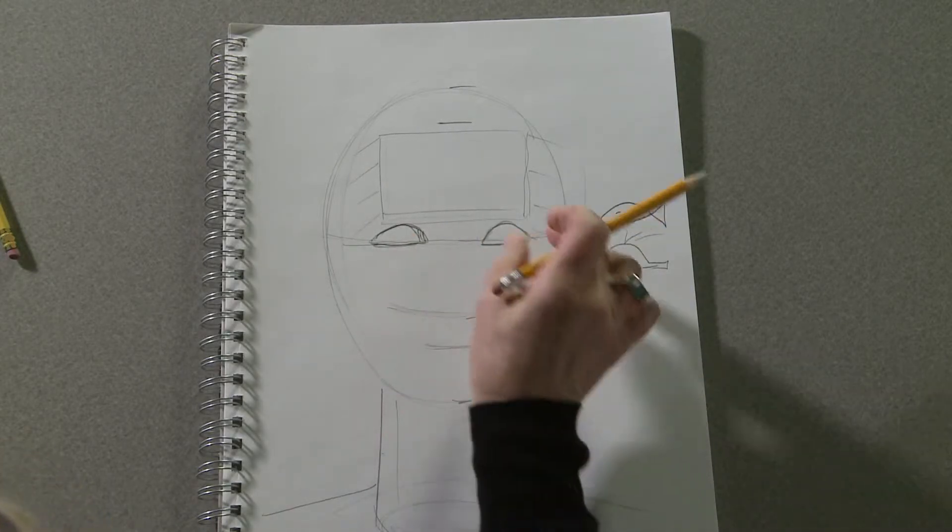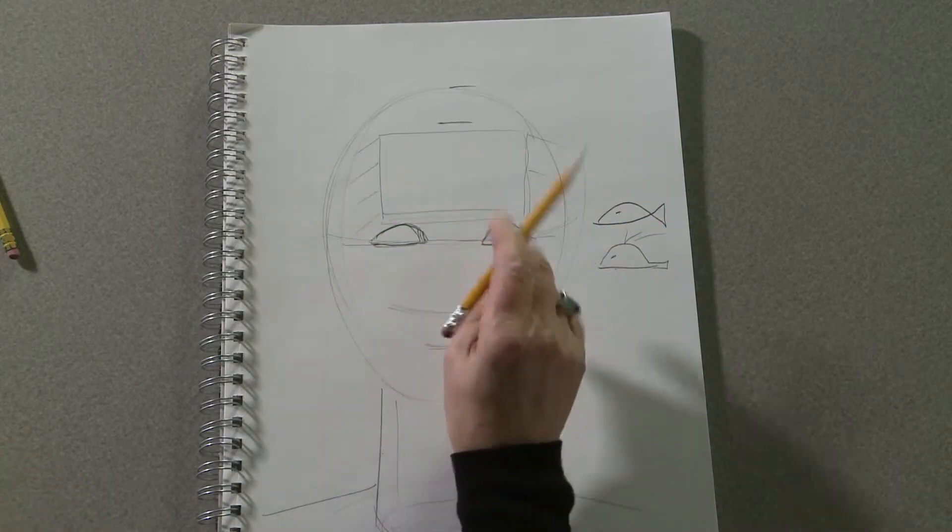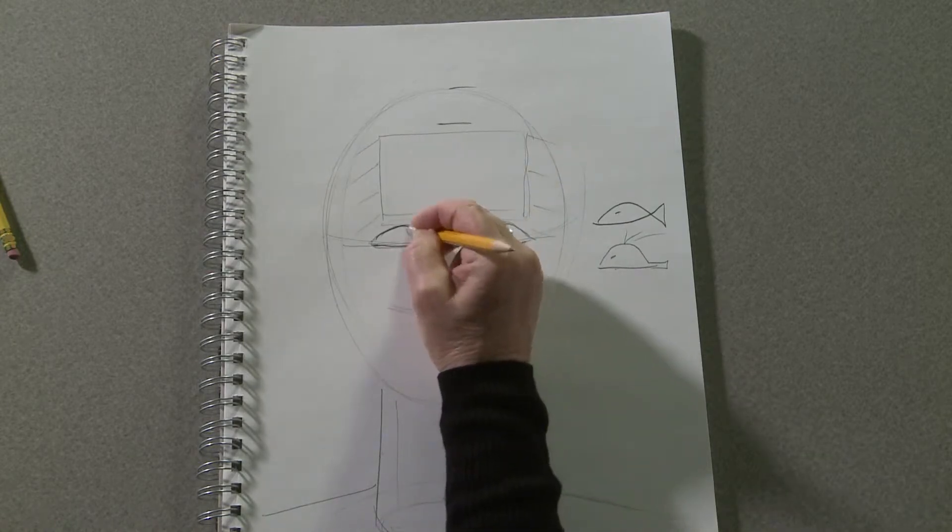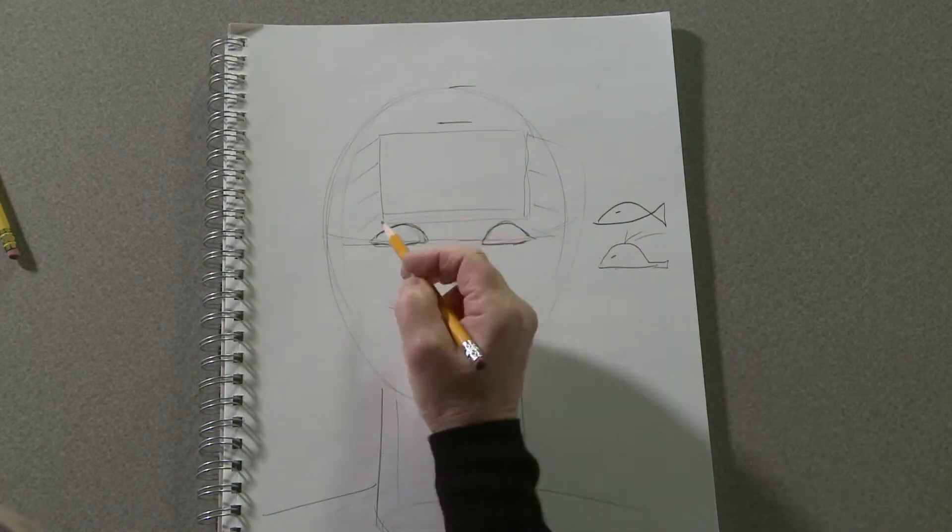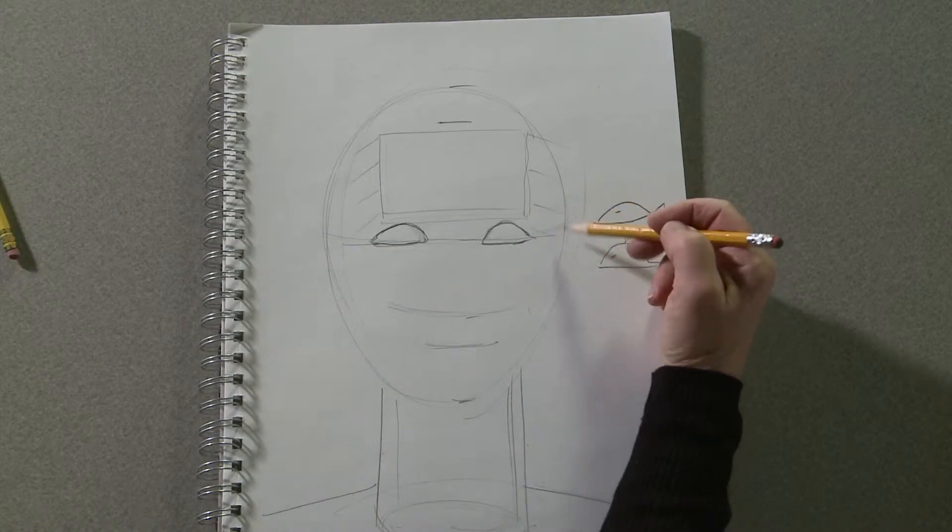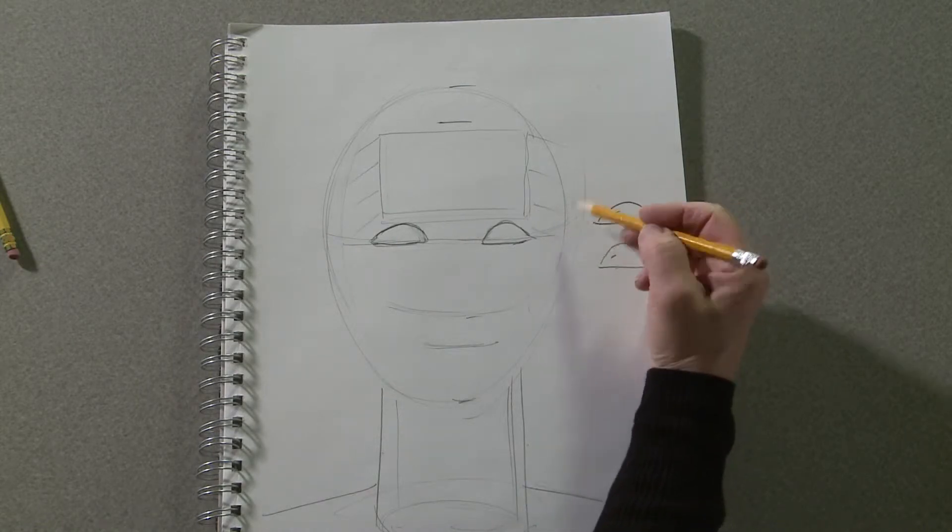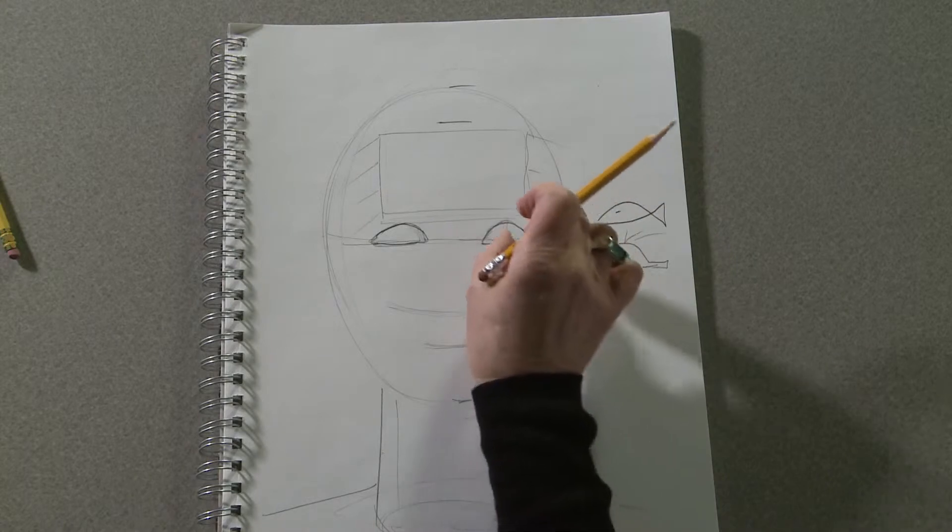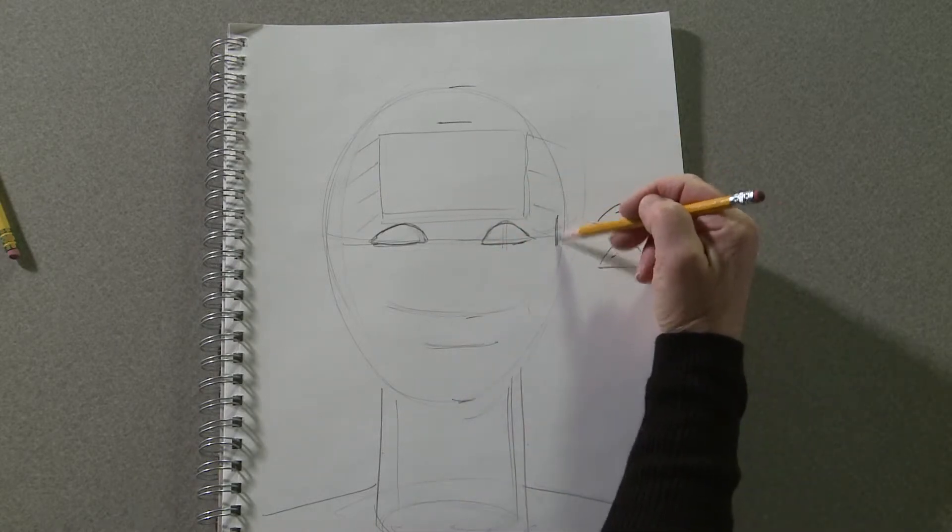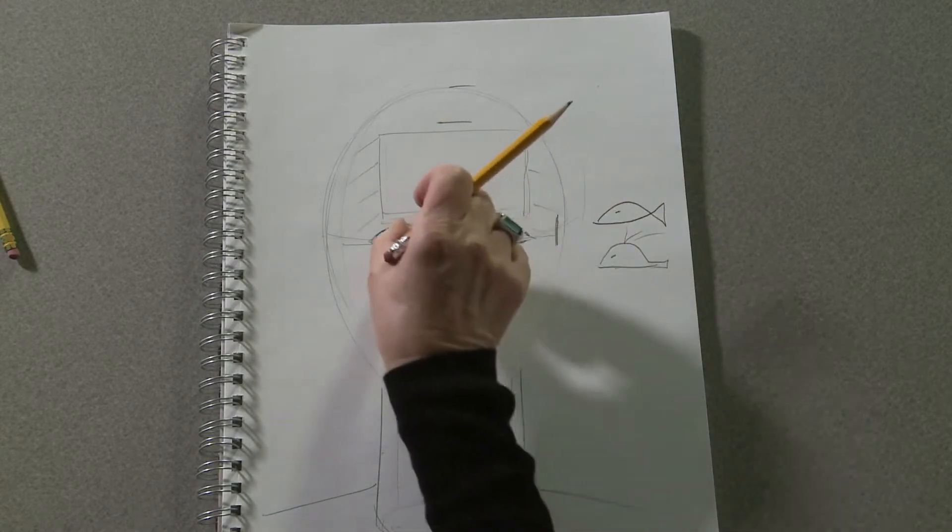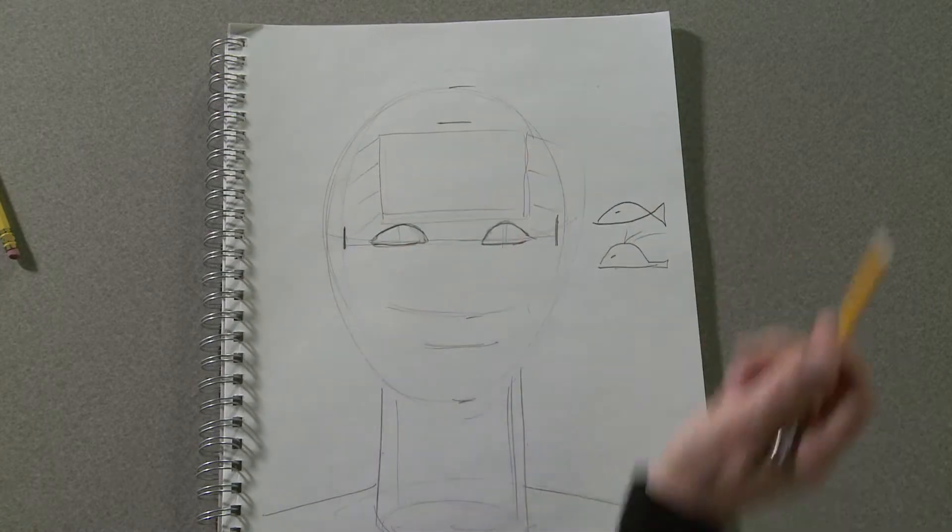The eyes should be approximately an eye width apart. And eventually, when we finish refining the shape of the head, we'll have a half an eye's width between the outer corner of each eye and the edge of the face.